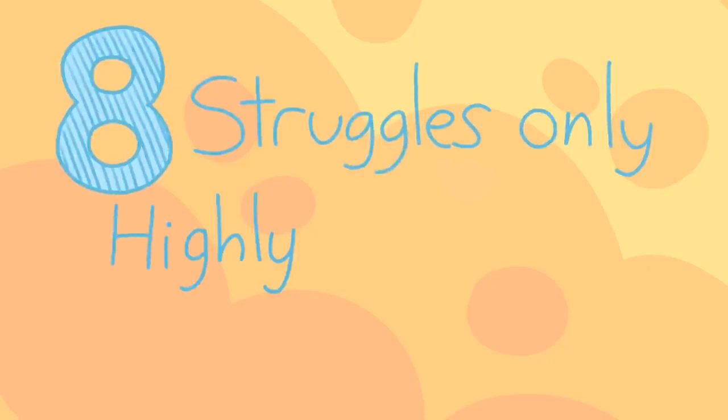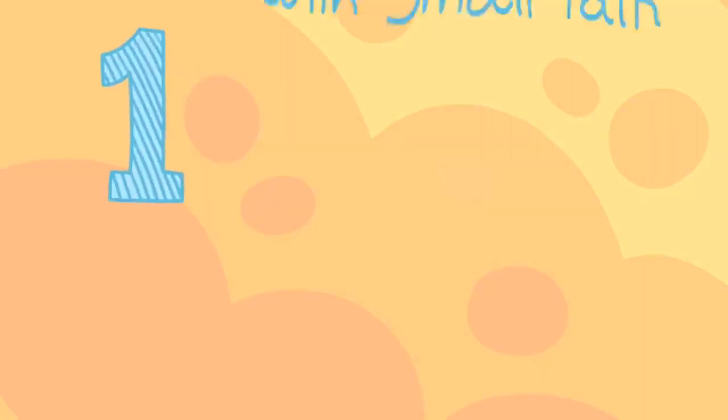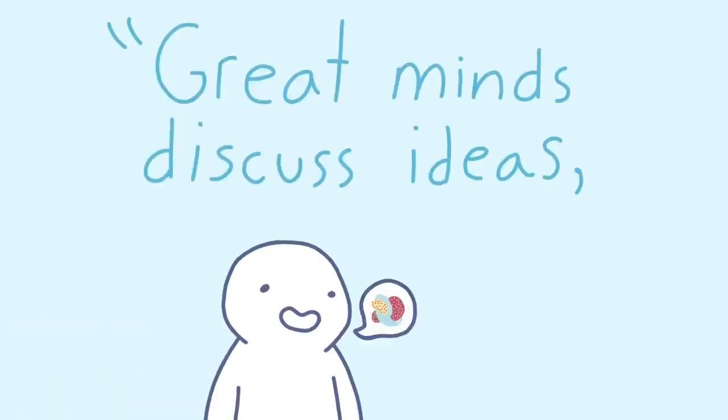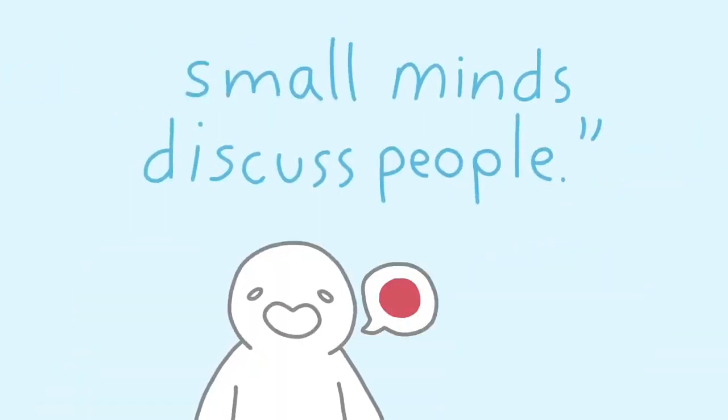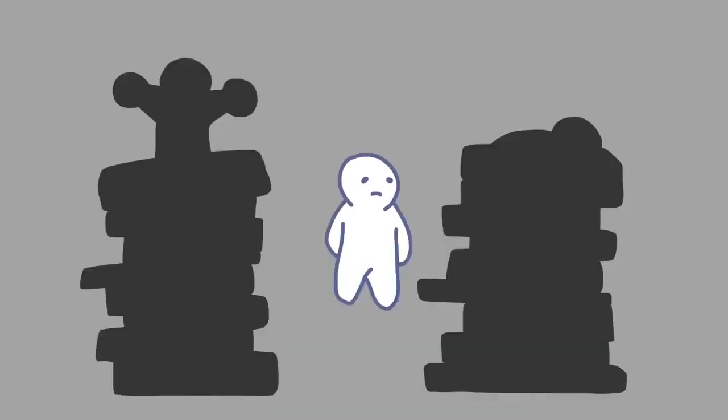Let's look at eight struggles only highly intelligent people will understand. One, you get bored with small talk. If you've ever heard the quote, 'Great minds discuss ideas. Average minds discuss events. Small minds discuss people.' This is what it means. Highly intelligent people aren't drawn to what they consider the unimportant details of life.